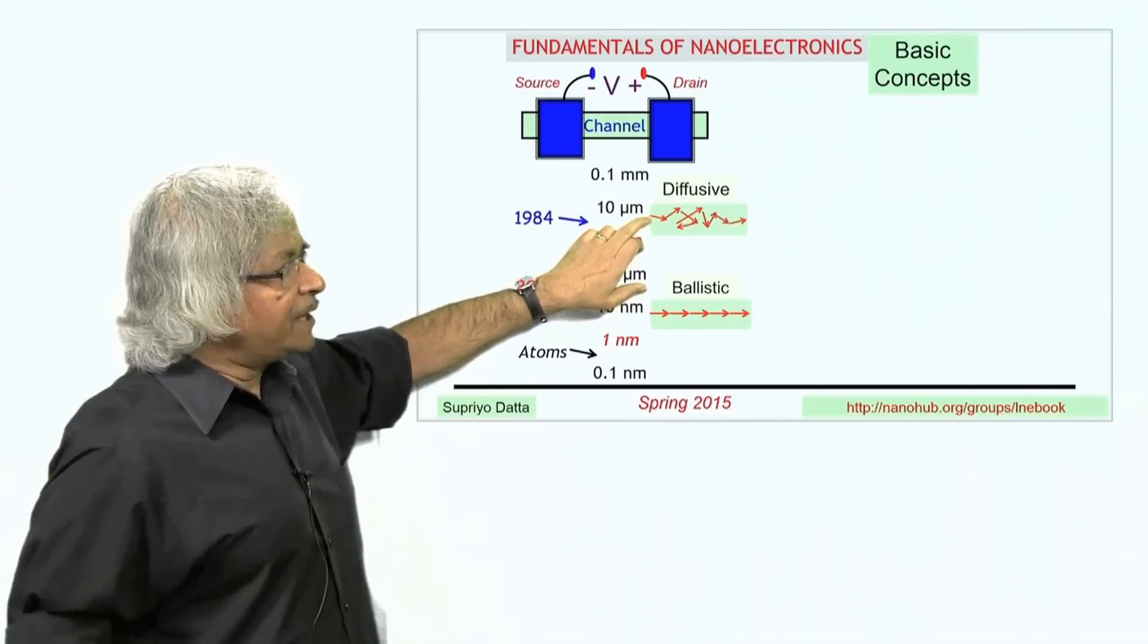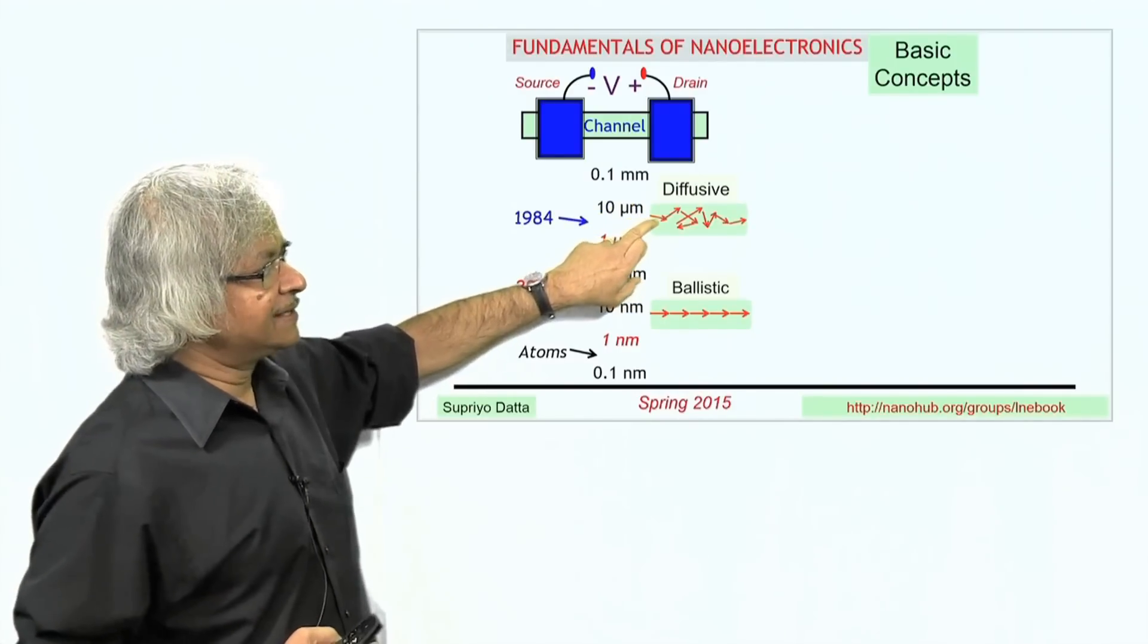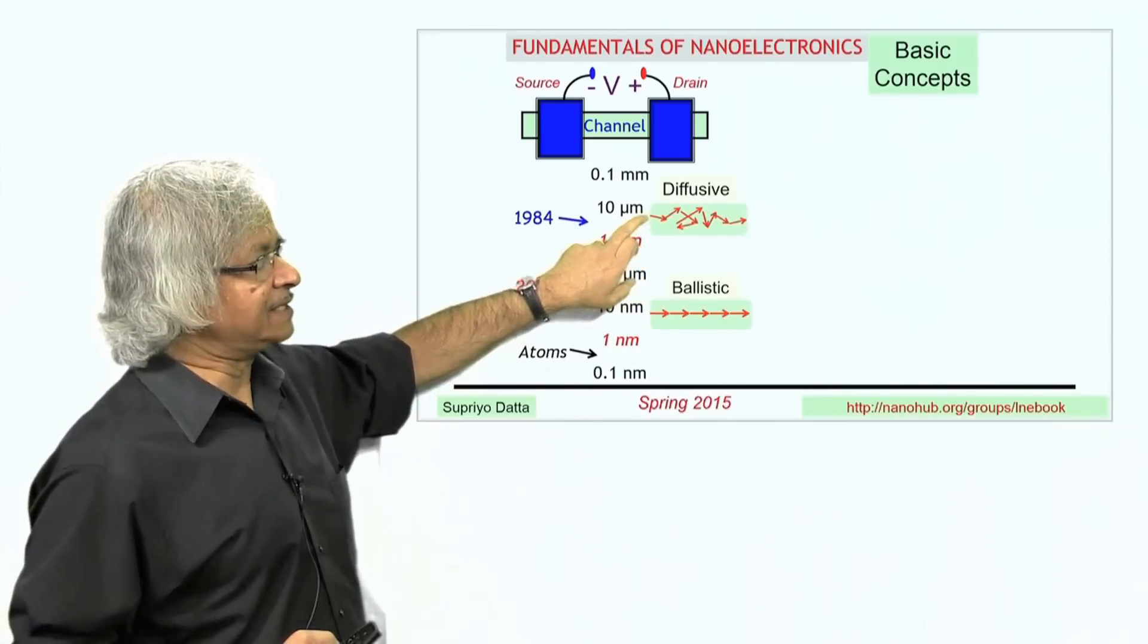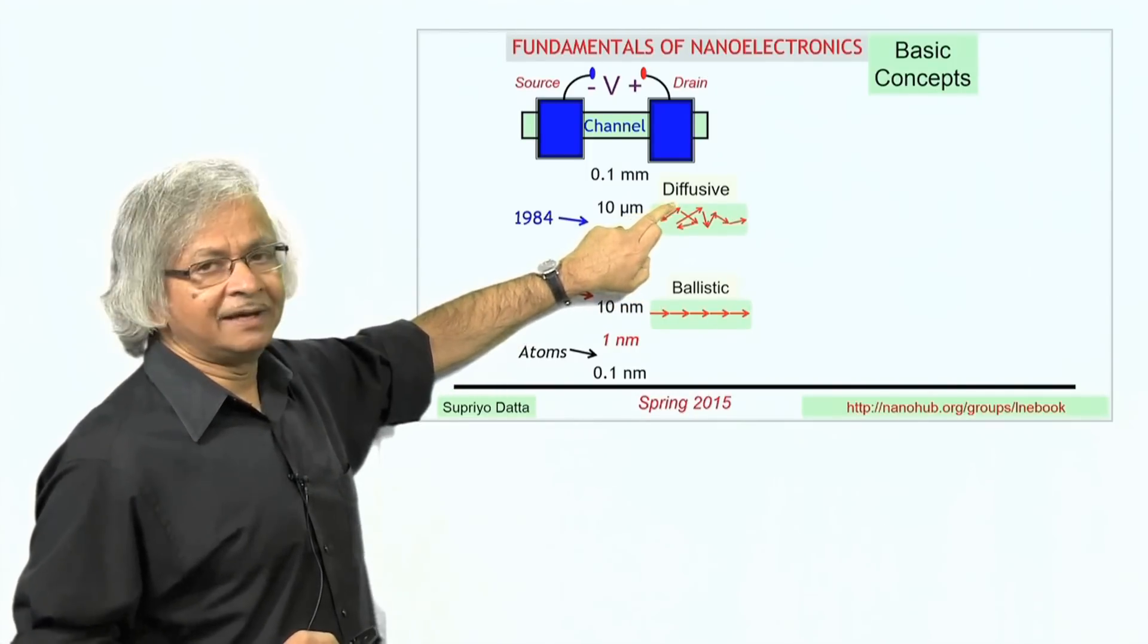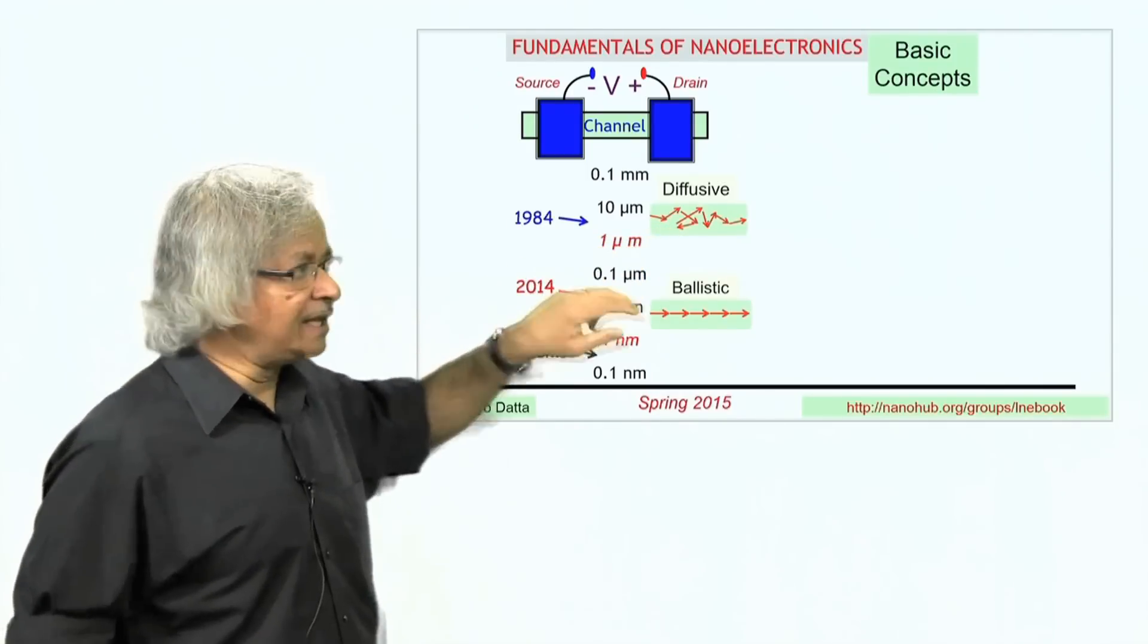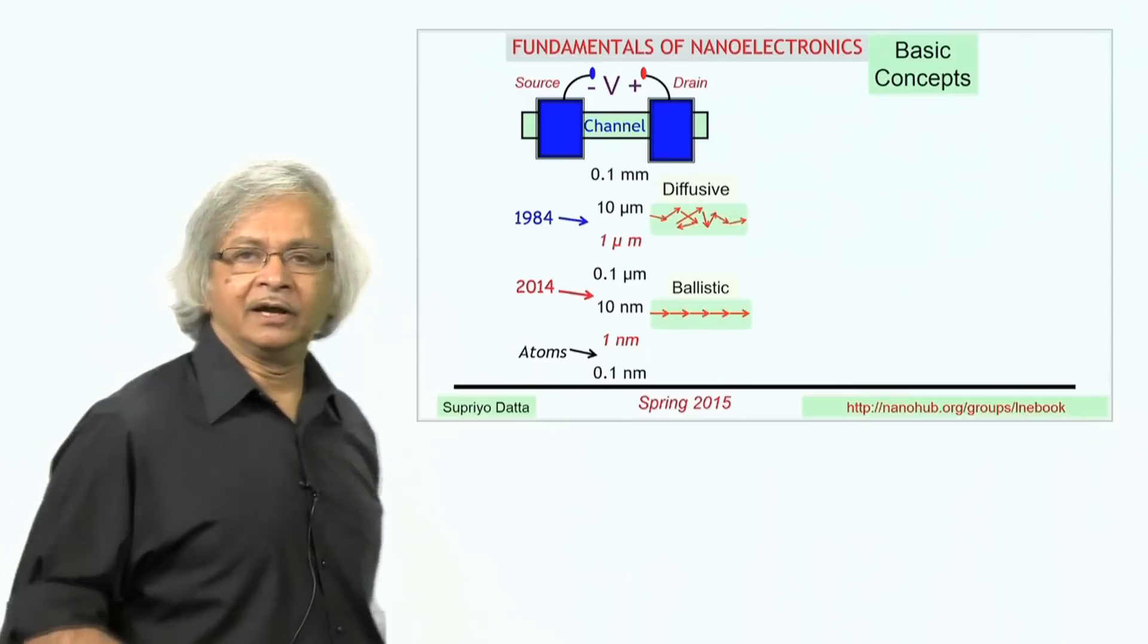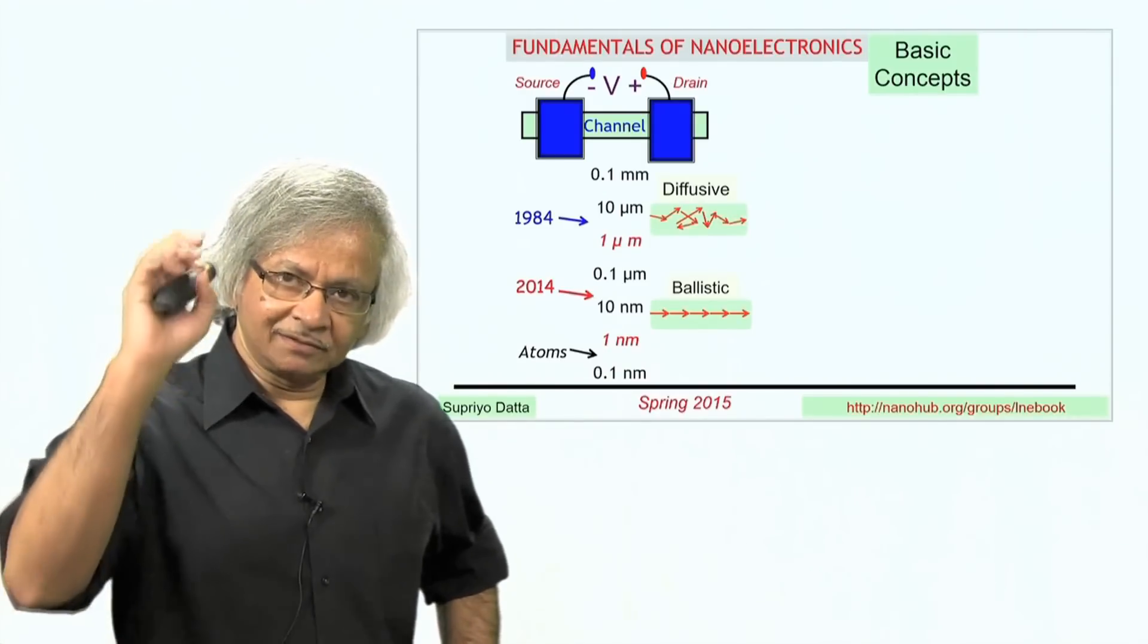The picture we usually carry in our head of how electrons go through a device is like a random walk. It starts out at one end, hits something, turns around, hits something else, turns around again, and so on. But today's devices are down to a point where a better paradigm is ballistic transport, like a bullet.